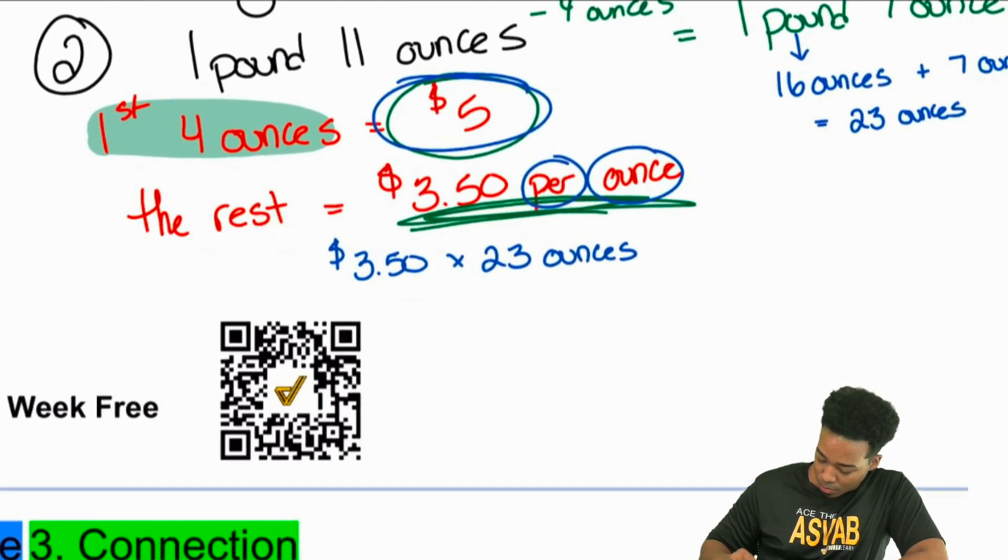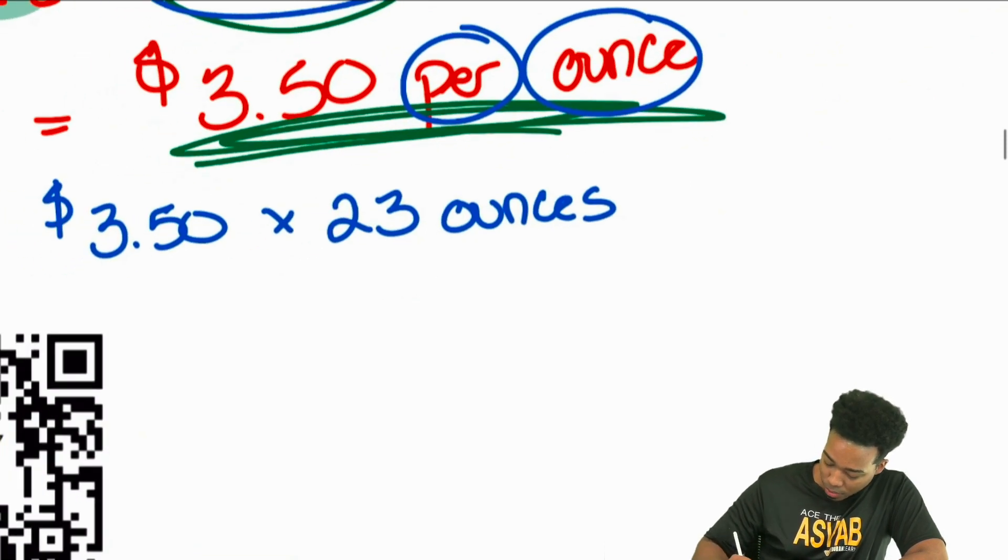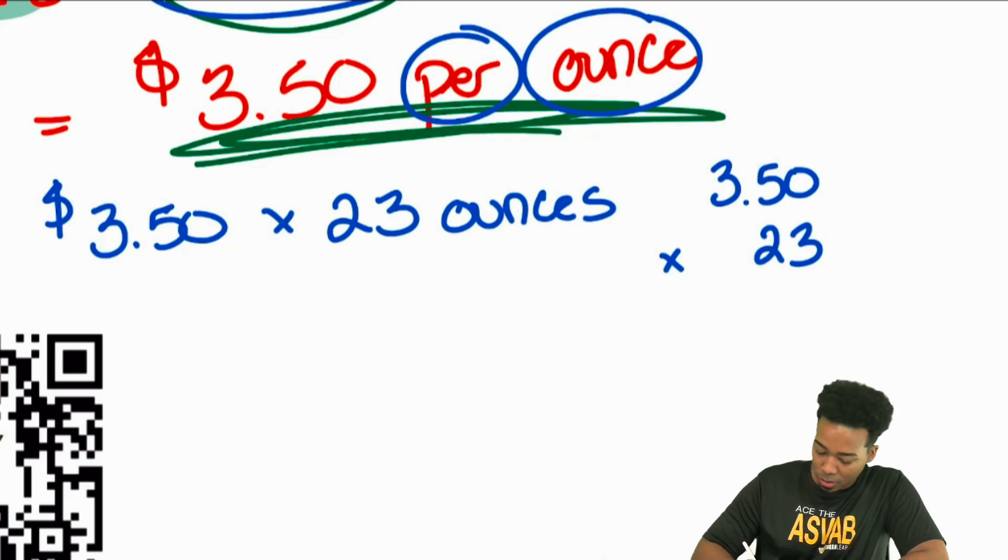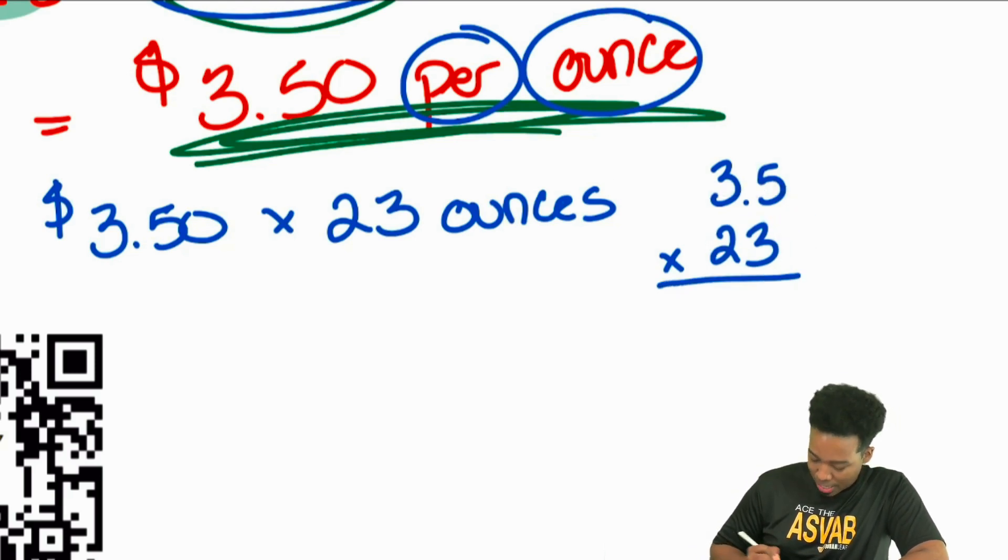Let's get back to the problem. $3.50 times 23. All I'm going to do here is 3.50 multiplied by 23. And the great thing is, if you know how decimal multiplication works, you can save yourself a little bit of room, a little bit of time by ignoring that last zero. You can do that, you're good. So we have 3.5 times 23. Same exact idea.